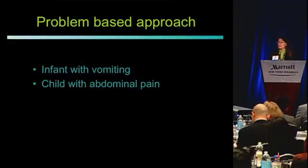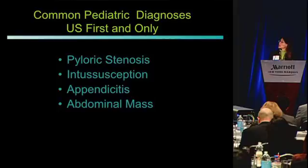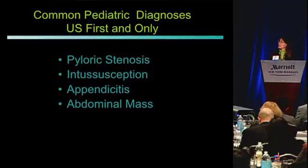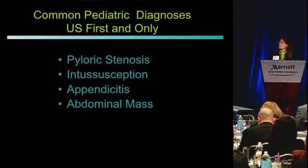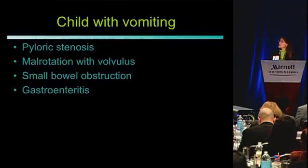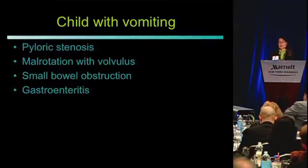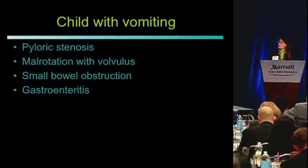I'm going to focus on the infant with vomiting and the child with abdominal pain — two very common scenarios. For the infant with vomiting we think about pyloric stenosis, intussusception, and appendicitis for pain, as well as abdominal masses. For the child with vomiting we think about pyloric stenosis, malrotation with volvulus if there's bilious emesis, small bowel obstruction, and gastroenteritis.